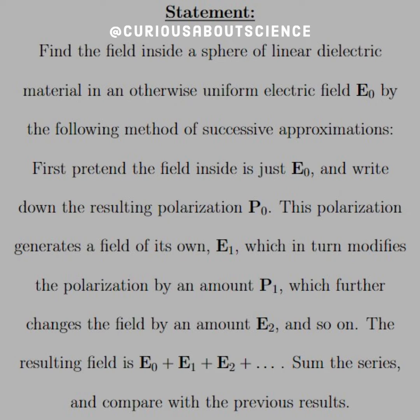First, pretend the field inside is just E0 and write down the resulting polarization P0. This polarization generates a field of its own, E1, which in turn modifies the polarization by an amount P1, which further changes the field by an amount E2, and so on.